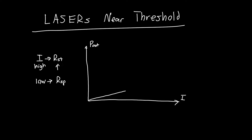Initially the slope was linear but fairly small, and the slope proportionality constant has beta spontaneous in it and some other coefficients. Then as you increase the current, when stimulated emission is dominant, you have a much larger slope. In between, we don't necessarily know what's happening — we figured out what happens when stimulated emission is dominant and when spontaneous emission is dominant, but what about when both of them are active at the same time?